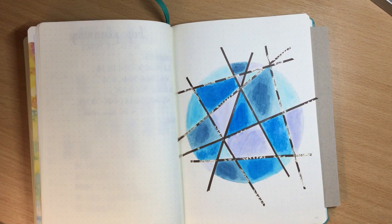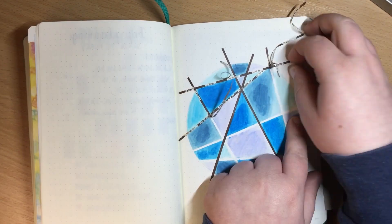Now when I remove the washi strips you can see the white border it created between the colors.